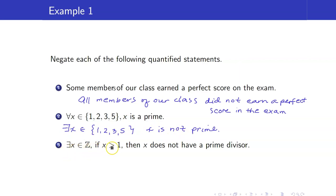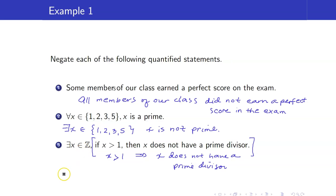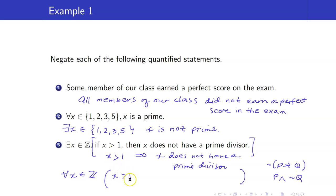Next, negate: 'There exists x in ℤ such that if x > 1, then x does not have a prime divisor.' The existential quantifier becomes universal, so we get 'for all x in ℤ.' The open sentence is an implication, and the negation of P → Q is P and not Q. So we copy the premise x > 1 and negate the conclusion: x has a prime divisor. In English: any integer is greater than 1 and it has a prime divisor.